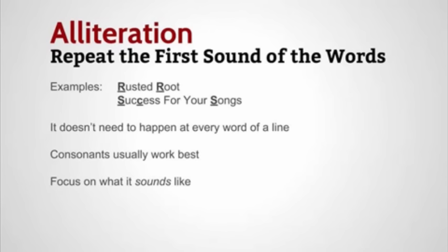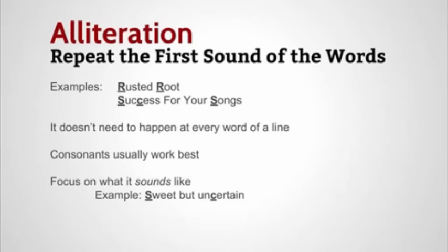The idea that sound is what's important also means alliteration doesn't have to be the first part of the word, and it doesn't have to be the same letter. Think about a phrase like 'sweet but uncertain' — the S sound on sweet and the S sound on the second syllable of uncertain create alliteration, even though one starts with S and the other has a C in the middle of the word. It's hitting the beginning of a syllable, so you're still getting that alliteration — you can hear it, and that's what's important.